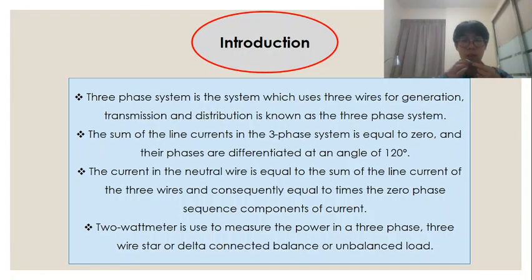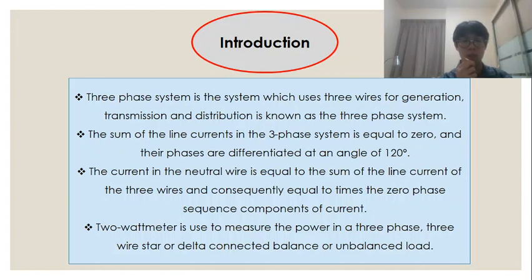Moving on to the introduction part. A three-phase system is a system with three phases. The current will pass through three wires and there will be one neutral wire for passing the return current to the earth. In other words, the system which uses three wires for generation, transmission, and distribution is known as the three-phase system.